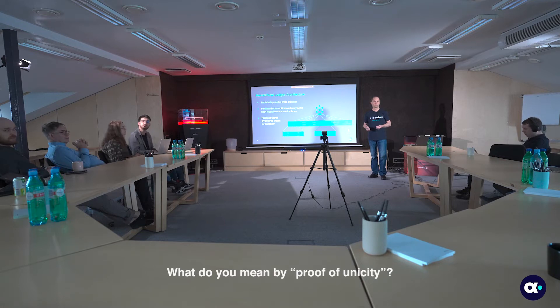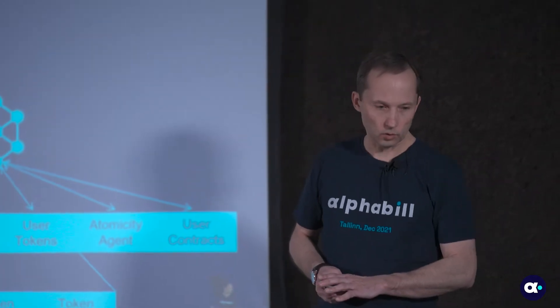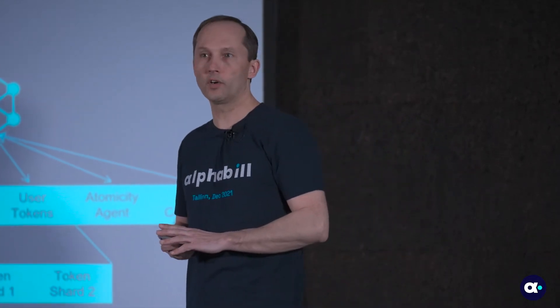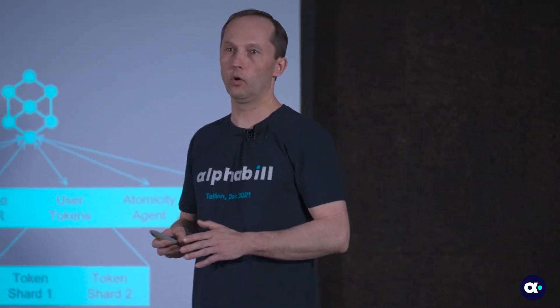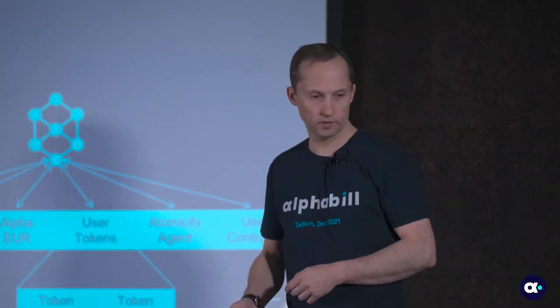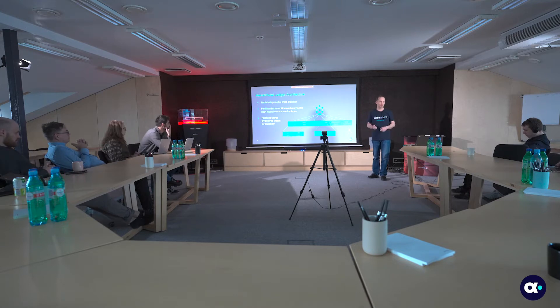Regarding proof of unicity: the root chain provides proof of unicity, meaning there is one version of the history of all transactions across all partitions, and we cannot maintain multiple parallel histories. If there is anything unclear in the following slides, feel free to jump in with questions.